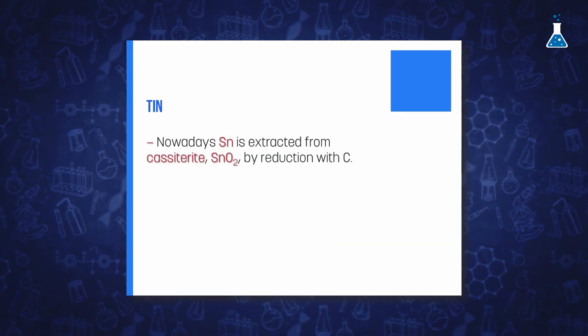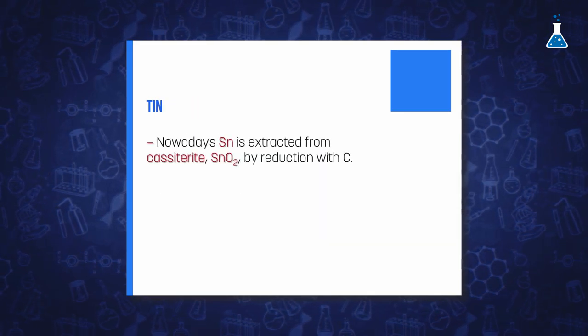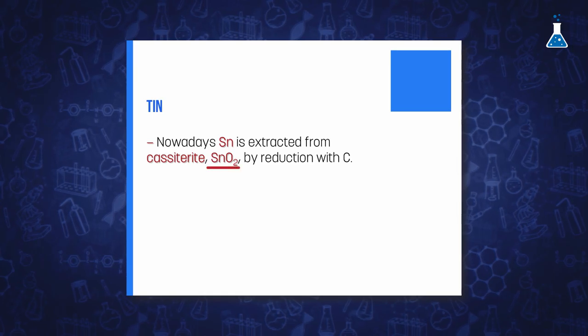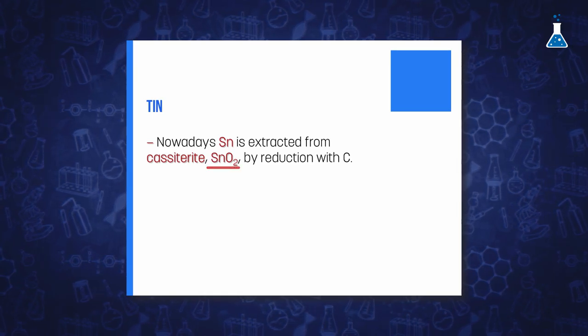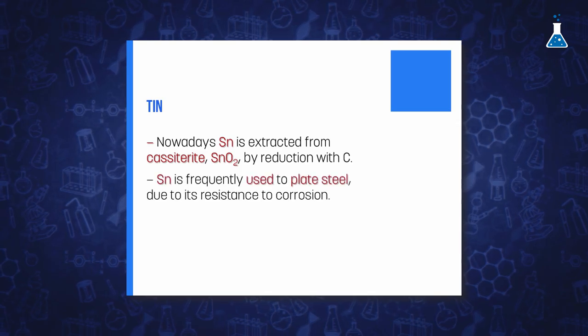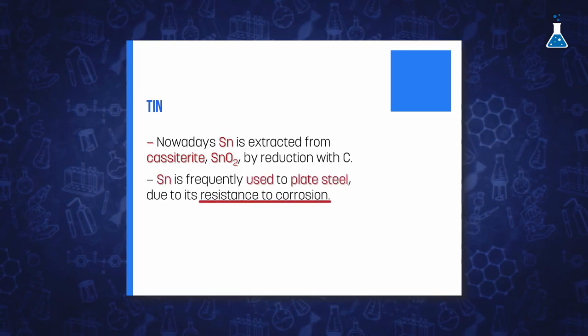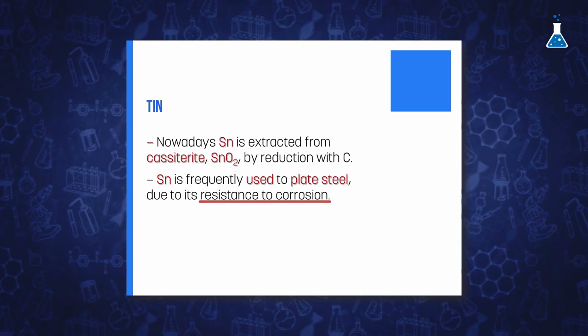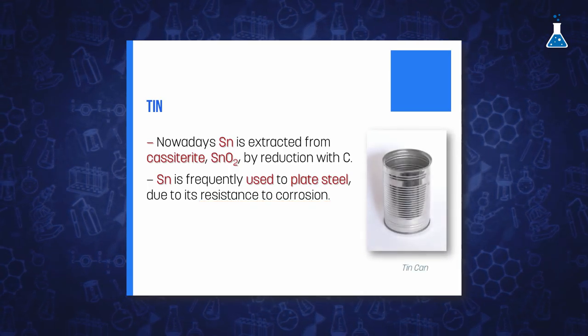Nowadays, tin is extracted from the mineral cassiterite by reduction with carbon, and it is a very useful metal due to its resistance to corrosion, as we find it frequently to plate steel, which is used in tin cans. Another important characteristic of tin is that it is the element that has more stable isotopes than any other element.